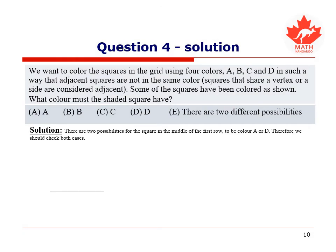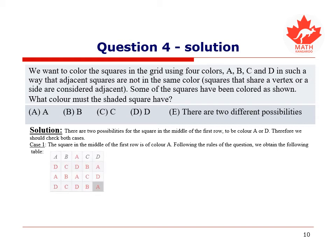For this question, there are two different possibilities for the square in the middle of the first row to be colors A or D. Therefore, it is necessary to check both cases. In case 1, the square in the middle of the first row is color A. Consequently, following the required rules, we obtain the following colors for the rest of the table.